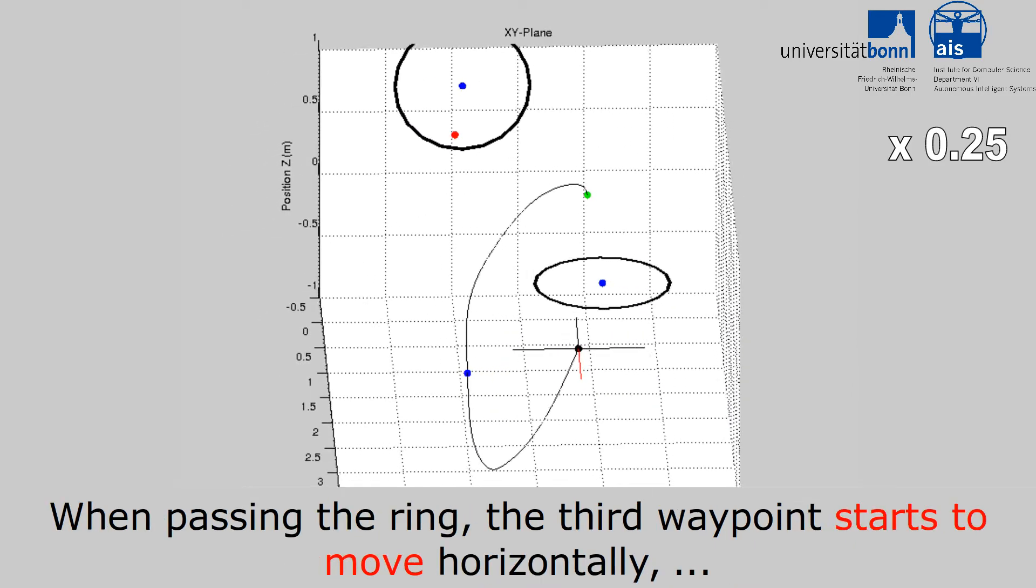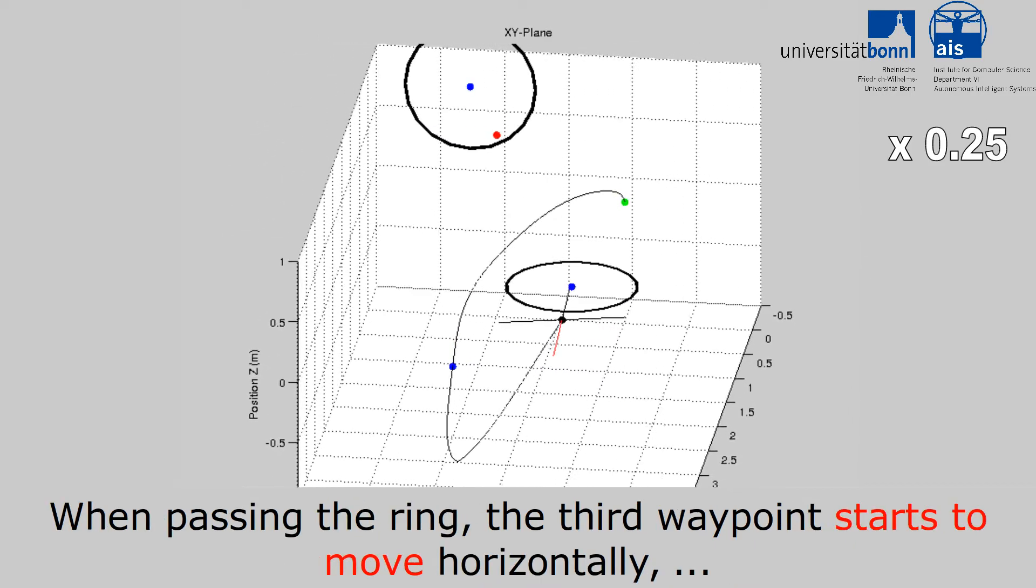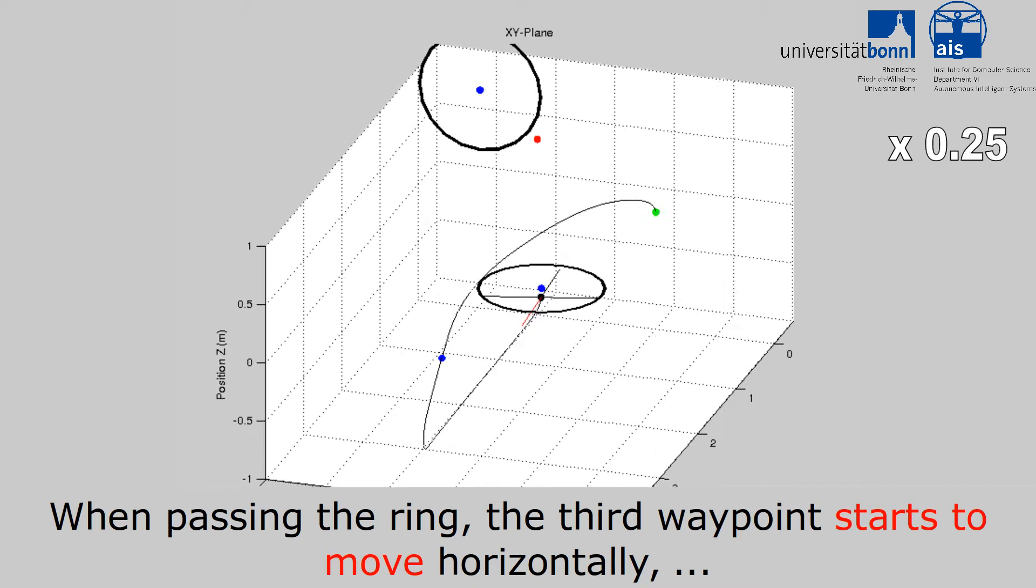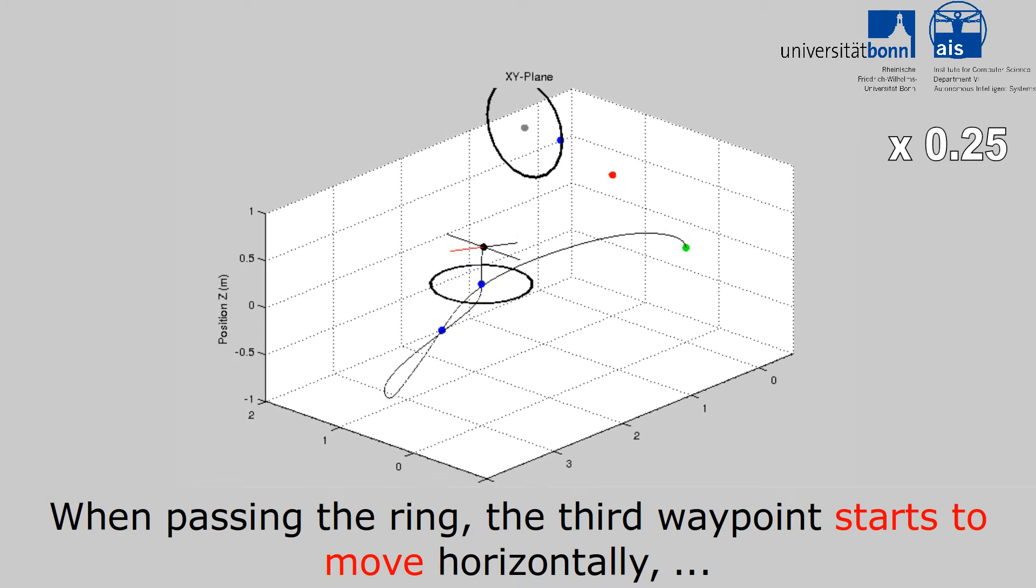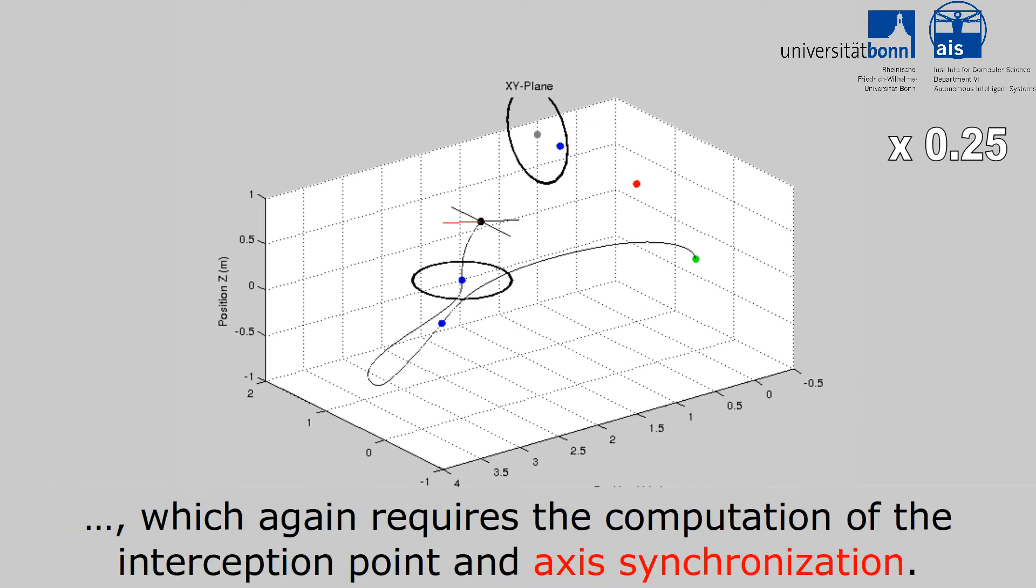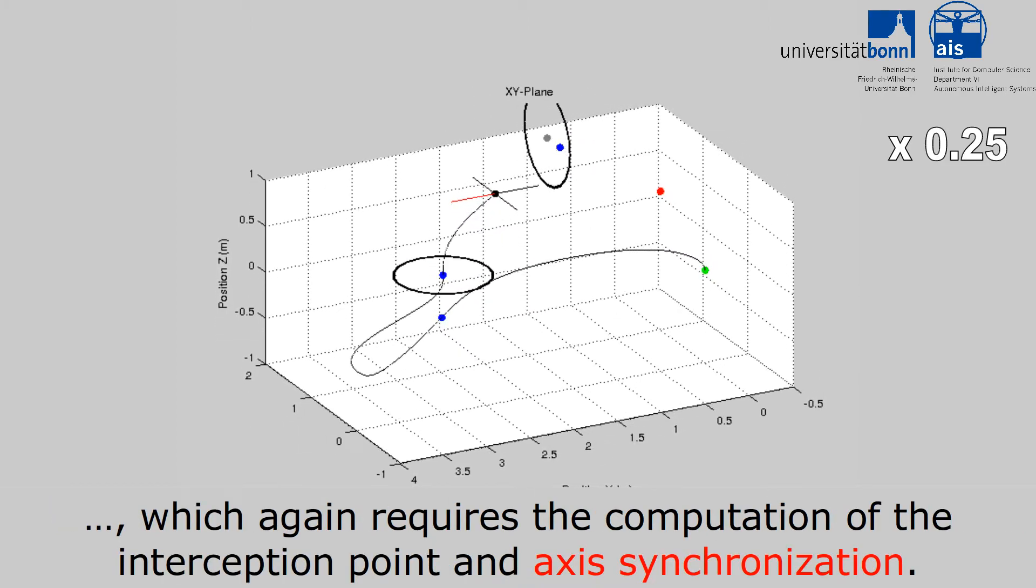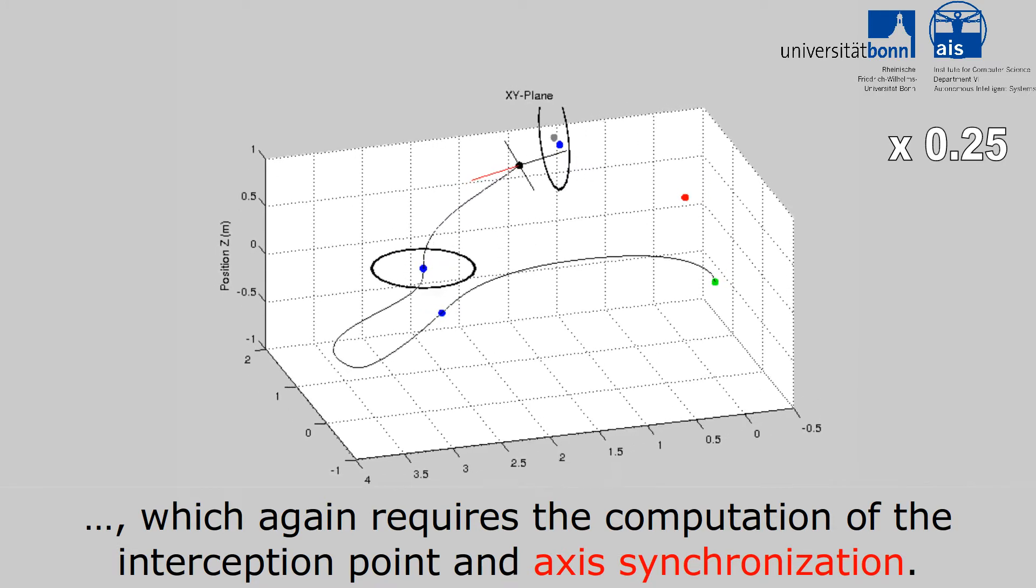When passing the ring, the third waypoint starts to move horizontally, which again requires the computation of the interception point and axis synchronization.